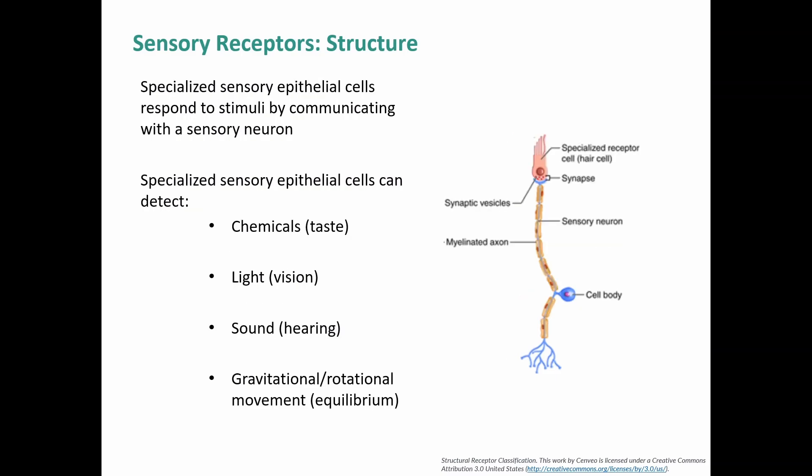Lastly, specialized sensory epithelial cells do the detecting and then communicate with the sensory neuron, usually by releasing a neurotransmitter. Specialized sensory epithelial cells can detect chemicals when looking at taste, light when looking at vision, sound for hearing, and gravitational or rotational movement for equilibrium.